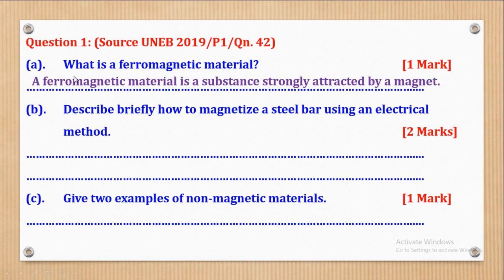A ferromagnetic material is a substance strongly attracted by a magnet. If you wrote that, that will be one mark.